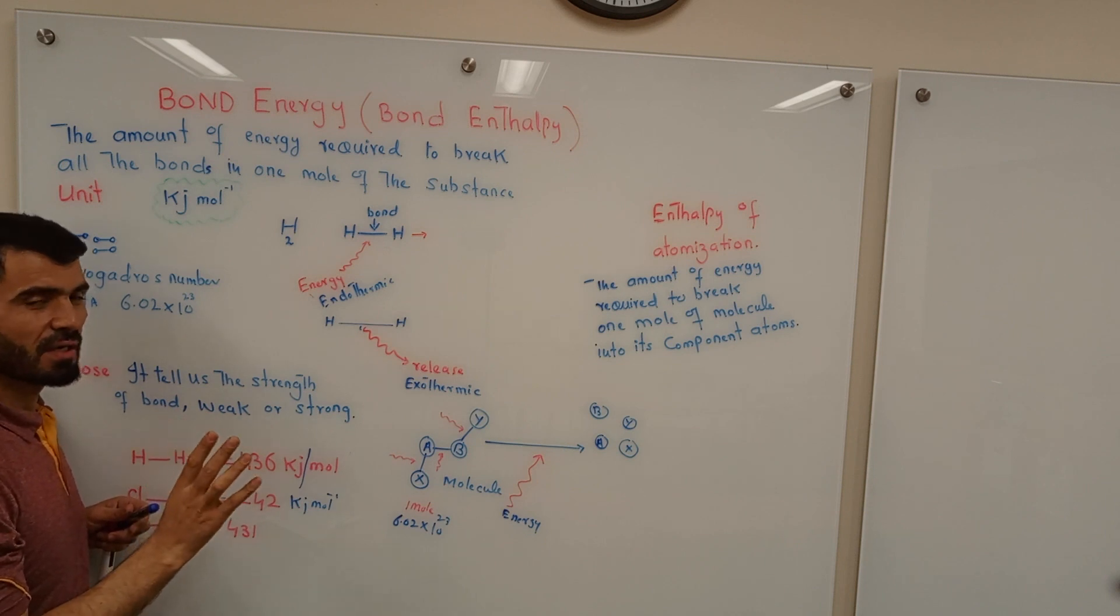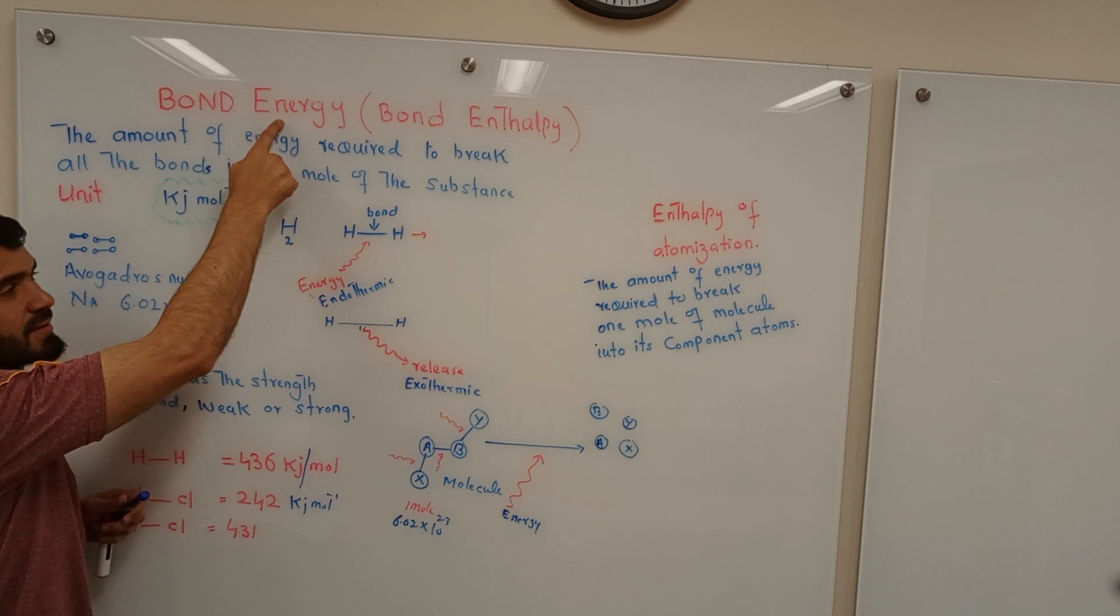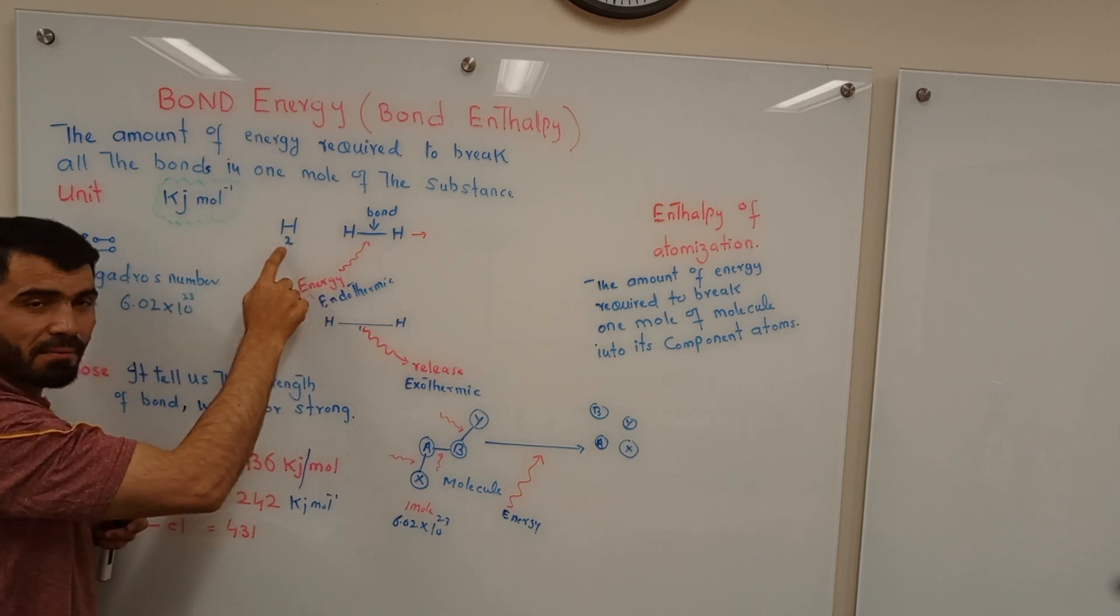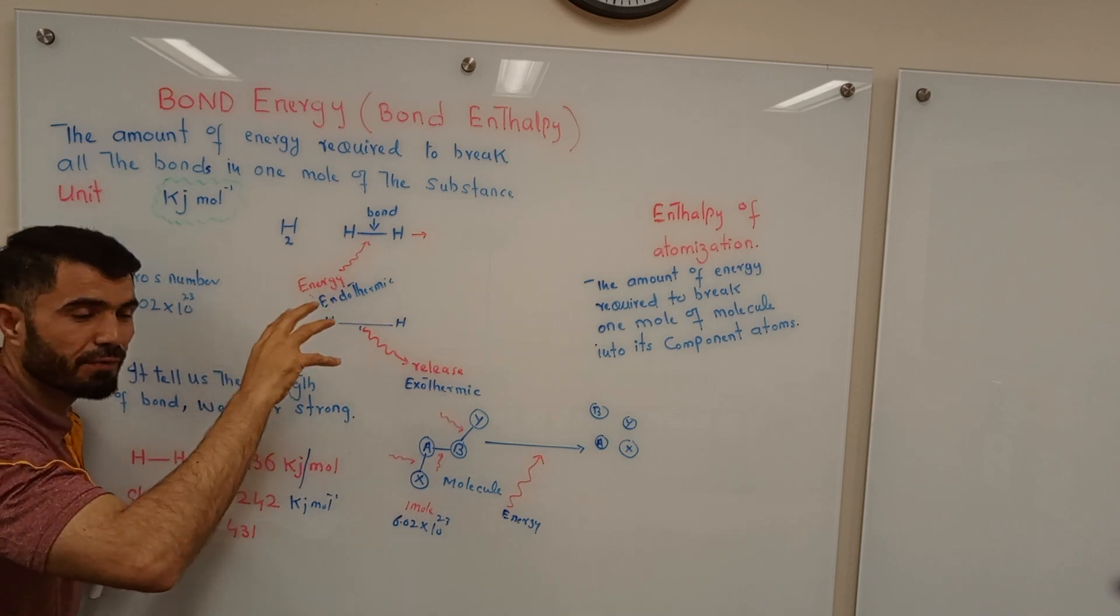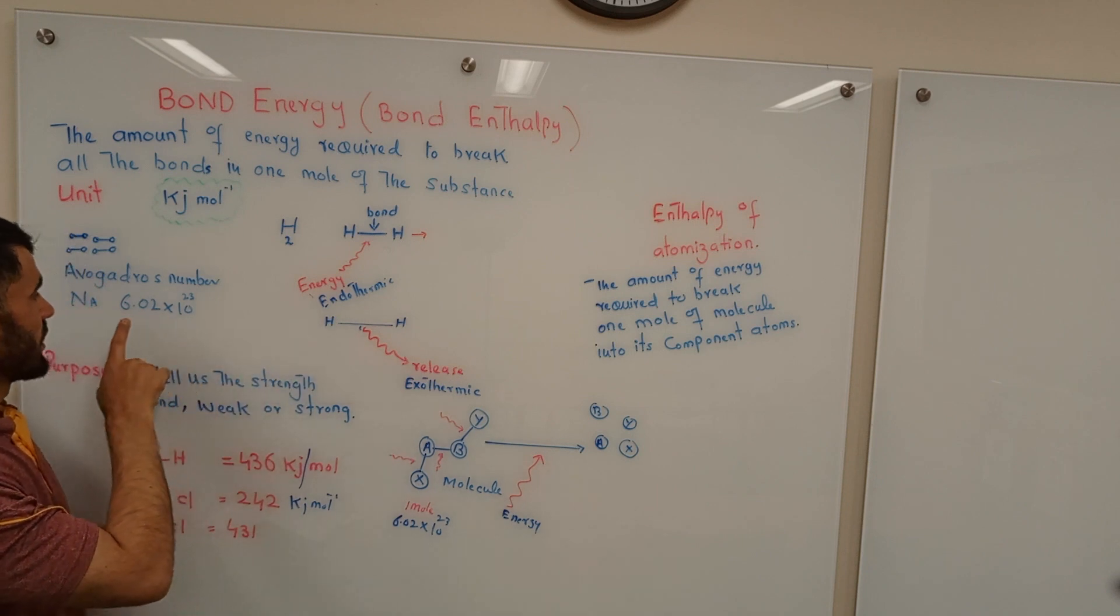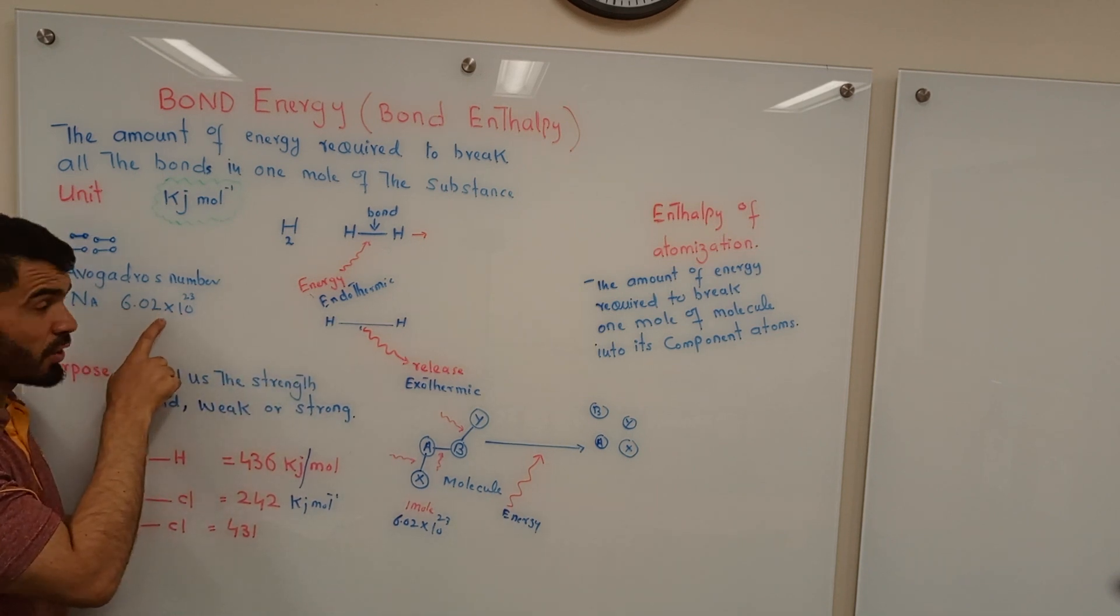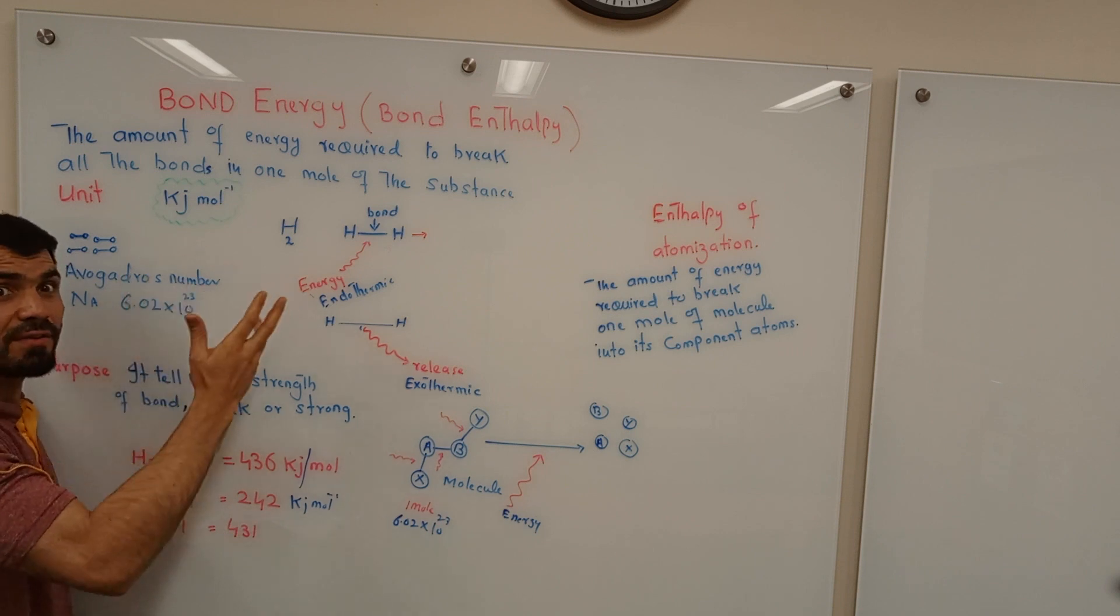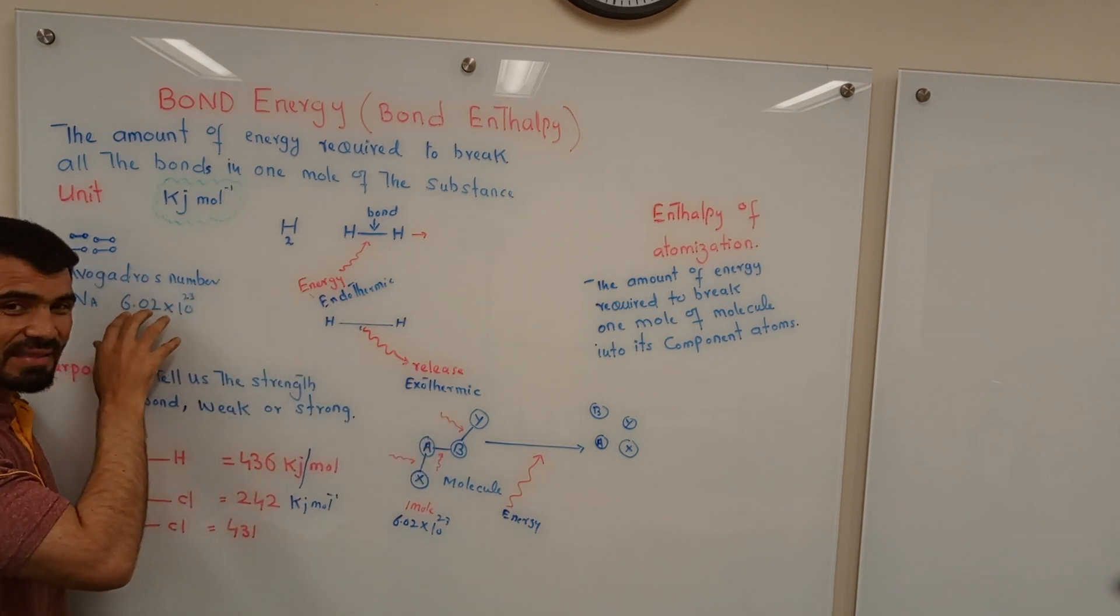Something is missing here. Why? Because for bond energy, you cannot use just one molecule. You will take a specific number of molecules. A specific number is Avogadro's number. So you will take this amount, 6.02 into 10 raised to 23 molecules, such a huge number.